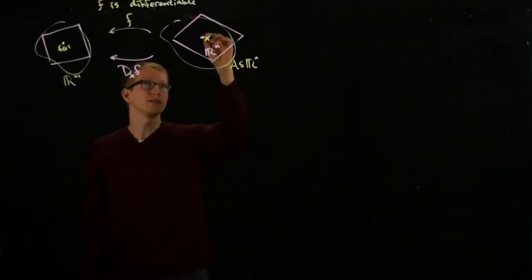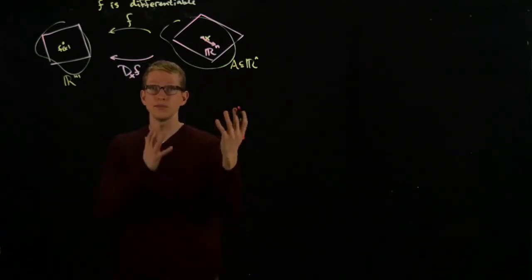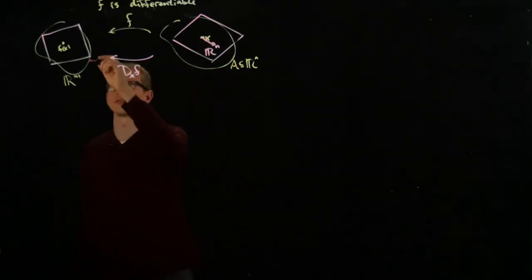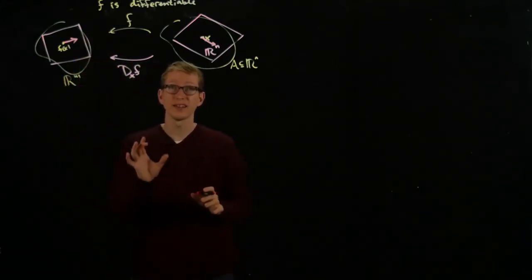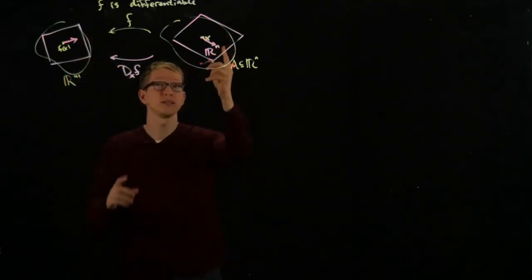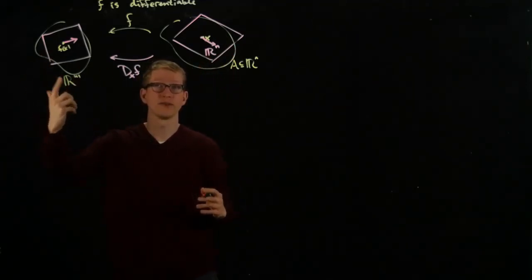Now, what does the differential do? If we have some vector, let's say here, then the image of this vector gets sent to another vector. Let's say over there. And this vector, no matter what it is, its origin is the point x. And here, the origin of that vector is f of x.